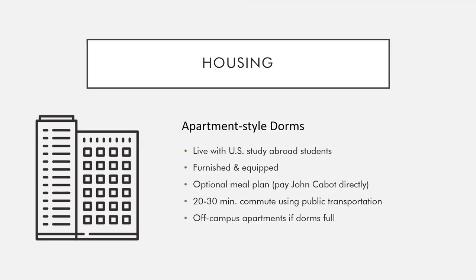In this program, students will live with other US City abroad students in furnished and equipped apartment-style dorms. Students are not charged for meals through DU, but can choose to sign up for a meal plan and pay John Cabot directly. Students are placed in the dorms based on availability and should be prepared for commutes between 20 to 30 minutes using public transportation. If the dorms are full, John Cabot will place students in off-campus apartments, which may also include commute times.